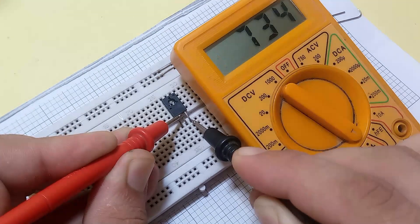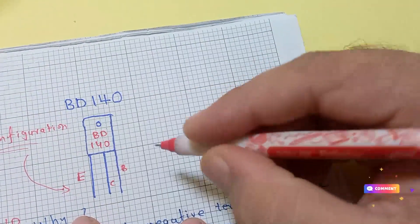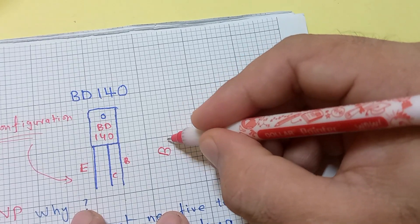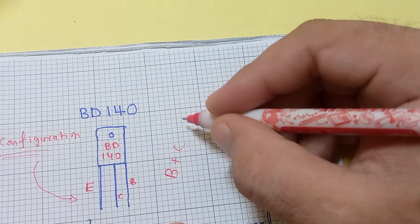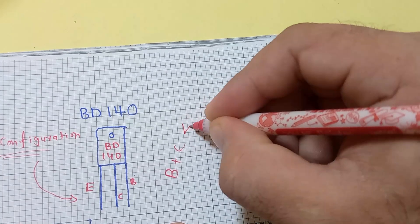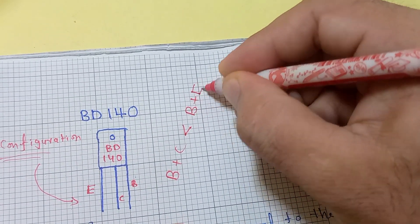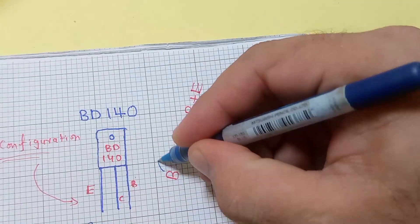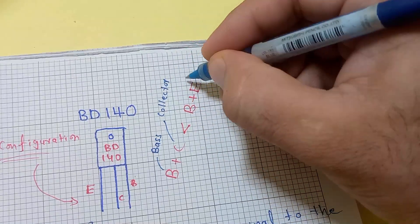Now move towards the next question: how do we find the collector and emitter of the transistor? Look at the general formula. As we know, base is common to both pins. The base-collector reading is always less than base-emitter reading. B stands for base, C stands for collector, and E stands for emitter.